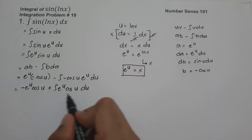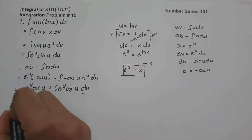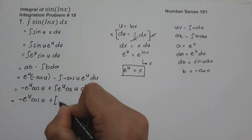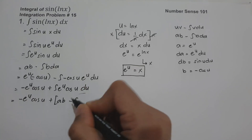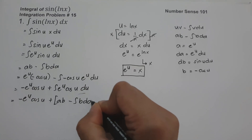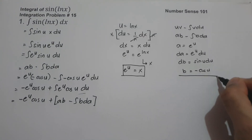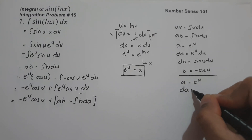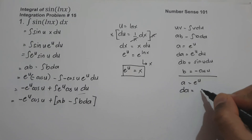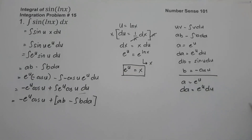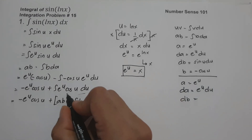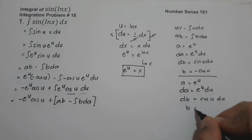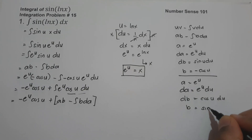I am going to use integration by parts again to simplify the remaining integral. Writing negative e raised to u cosine u plus the quantity ab minus the anti-derivative of b da. I set a as e raised to u, so da is e raised to u du. And dv is cosine u du, so b is the integral of cosine u, which is sin u.